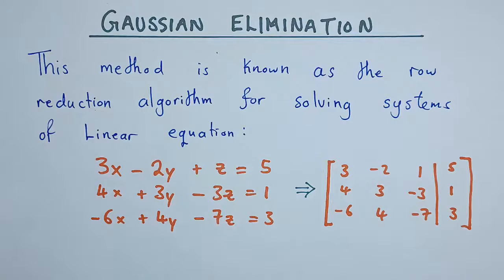Hi guys and welcome to this one. Today we'll be looking at the Gaussian elimination method and matrices. This method is usually used to solve a system of simultaneous equations. It can be a 2 by 2, a 3 by 3, a 4 by 4, depending on how many variables you have. In this method we'll be using some concepts of row operations, and based on how you manipulate the matrices, you will see how we form simpler systems to help us solve the whole system of equations.